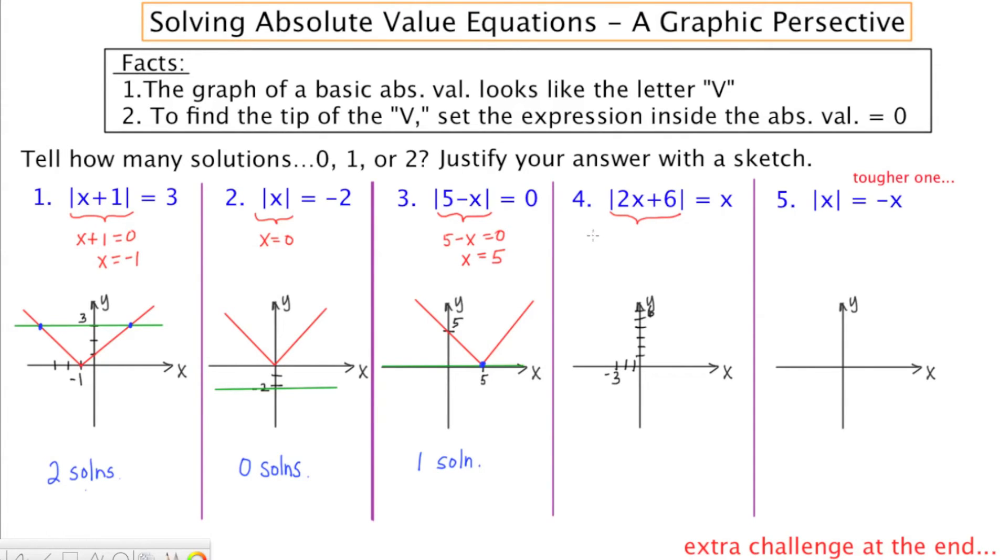Its graph is going to look like a V. The tip of the V will be found by setting this equal to zero: 2X plus 6 is equal to zero, getting a result of X equals negative 3.